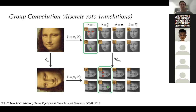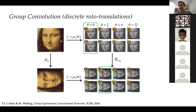In the group convolution for the group of rotations and translations, we're not just going to translate the filter but also apply rotations — rotation by 90 degrees, convolved again. In this case we don't get a good response because the eye is rotated the wrong way. We rotate another time and another time, and each time we do a translational convolution. So for each element in a roto-translation group, we apply it to the filter and compute an inner product with the signal to get a response.